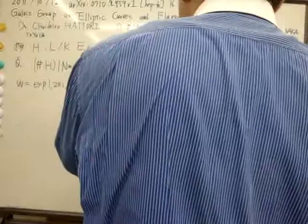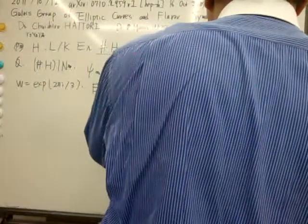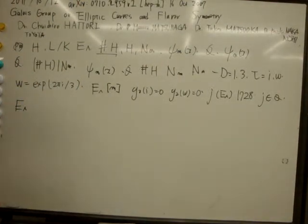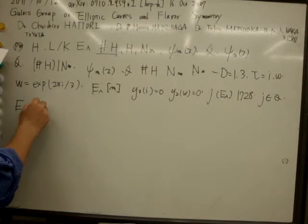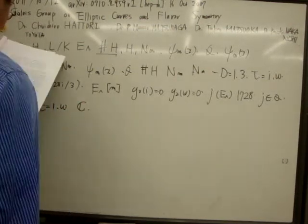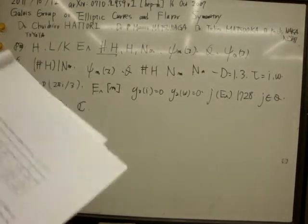E lambda is 1,728 and 0. The perspective is that J(Q) and E are associated with tau equals i omega is isomorphic to the elliptic curve.